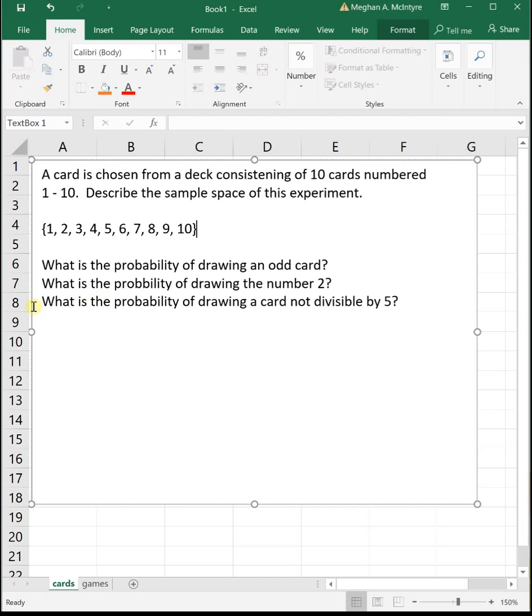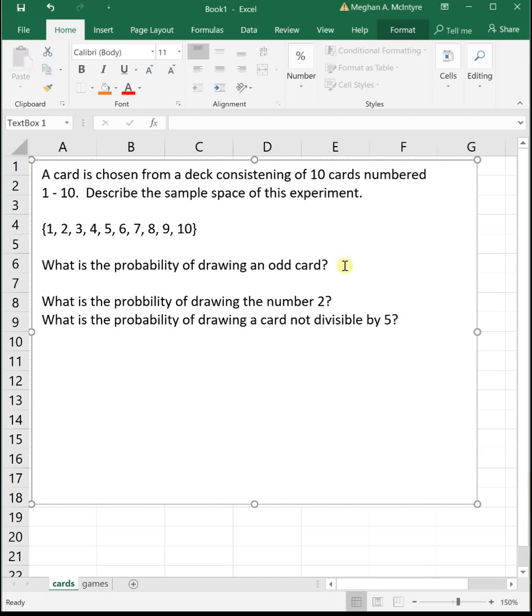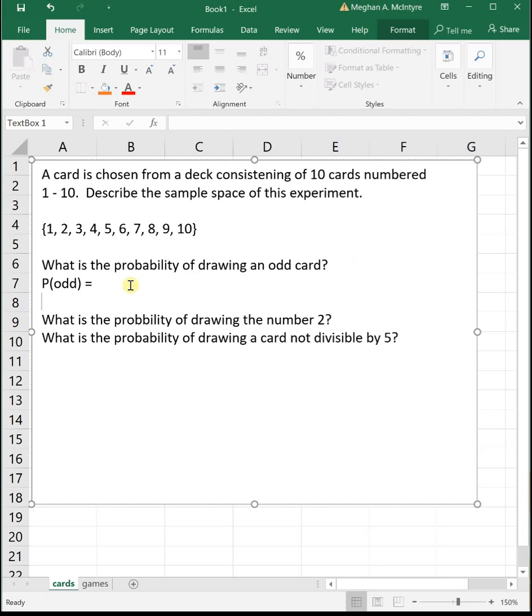So that would be our sample space. We have 10 cards, and then each card has one of the numbers 1 through 10. So the probability of drawing an odd card, we could say the probability of drawing an odd, this will be the number of odd cards divided by the total number of possibilities.